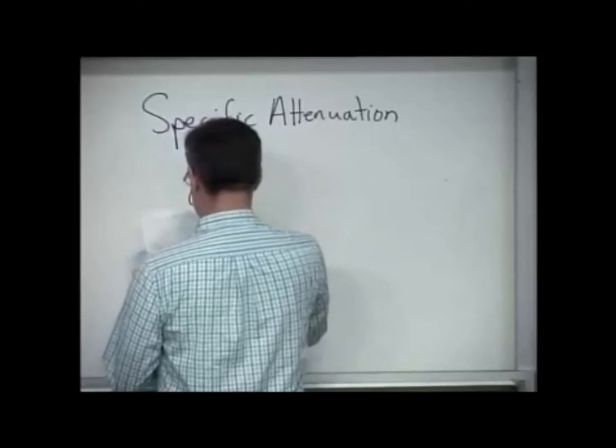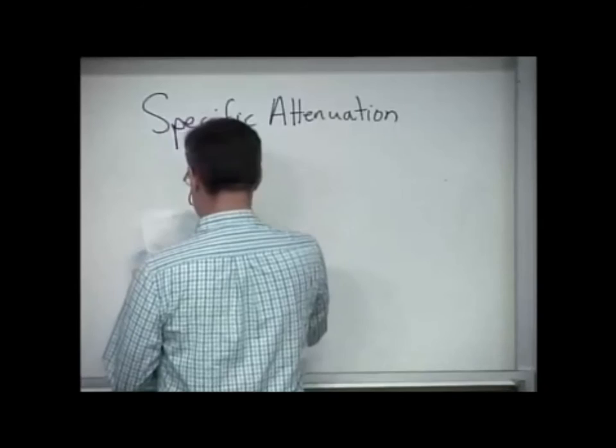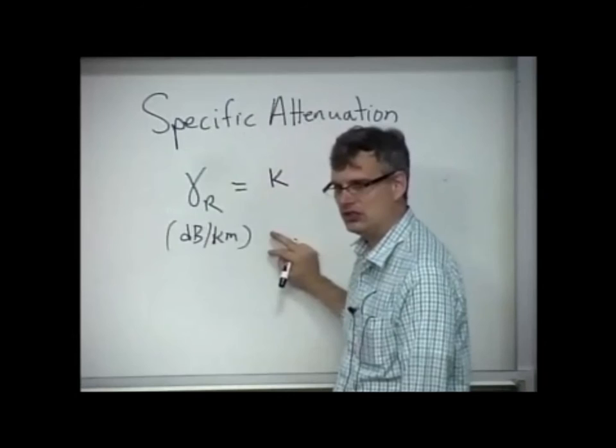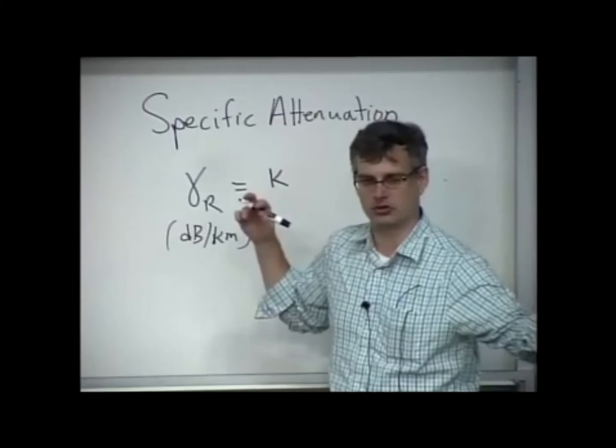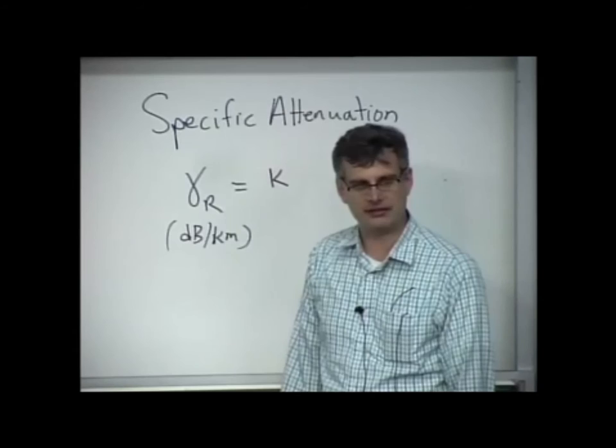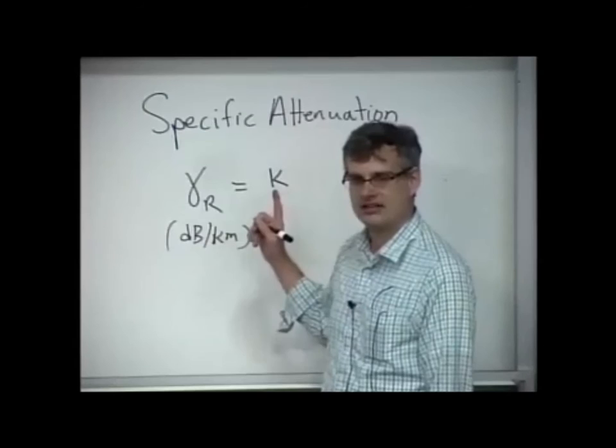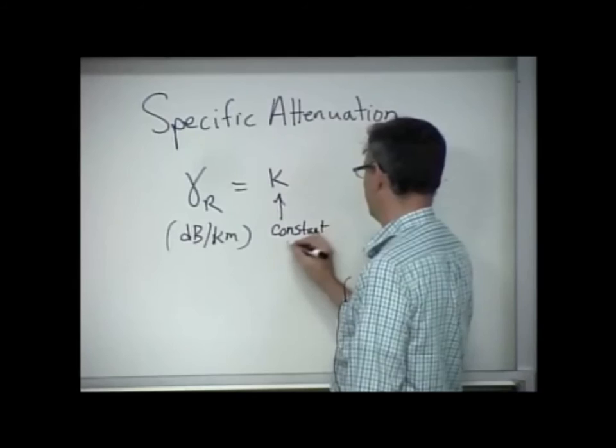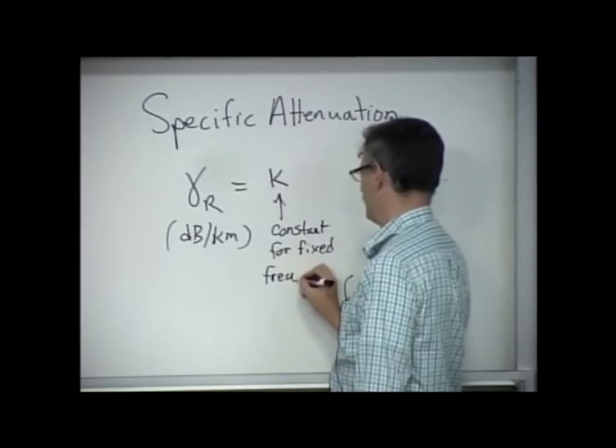Let's just look at the basic parts of specific attenuation. Gamma sub r, specific attenuation, this was in dBs per kilometer, is equal to some constant k. It is unfortunate that we are reusing constants in this class. But for any electrical engineering discipline, it's almost unavoidable. There are only so many letters in the alphabet. And even with our pretentious use of Greek, we still run out of letters. So recognize k is not wavenumber. In this instance, in the literature, it is a constant.